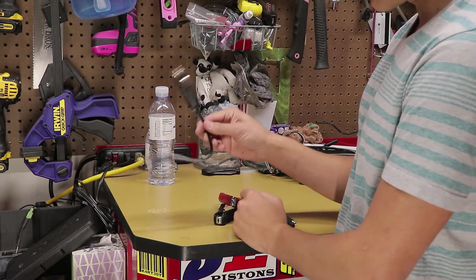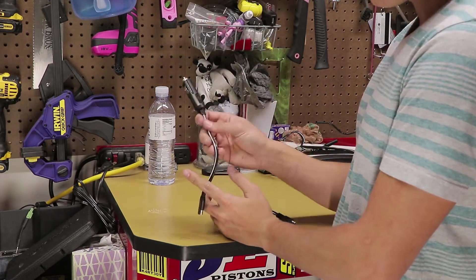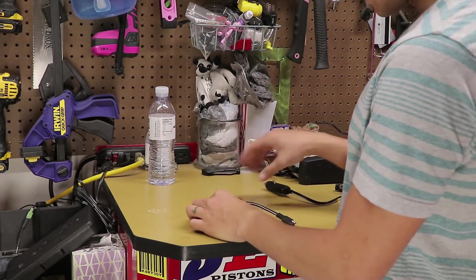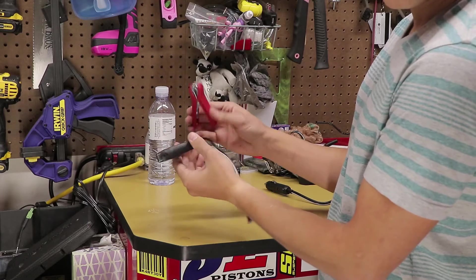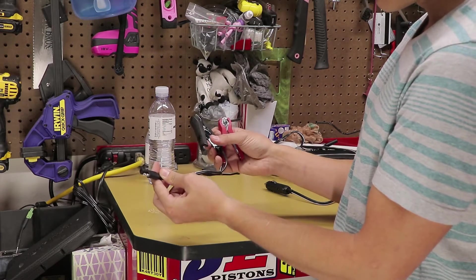Also included, looks like we've got a cigarette lighter adapter for vehicles that allow power to be charged in the battery that way. And then lastly, we've got our traditional clips along with the quick connector for the charger.